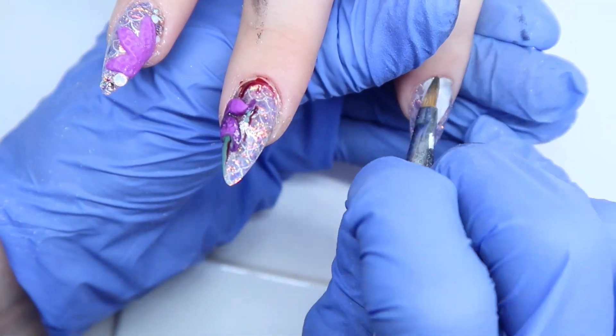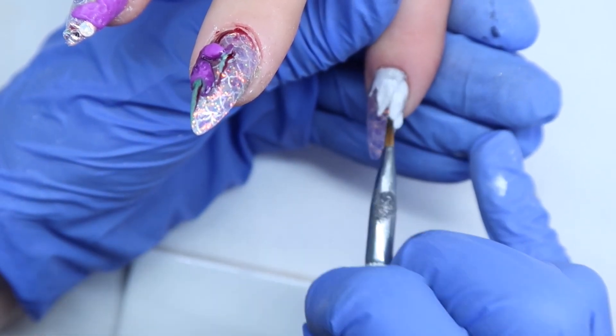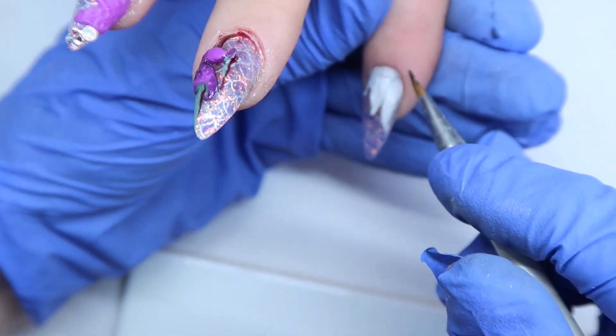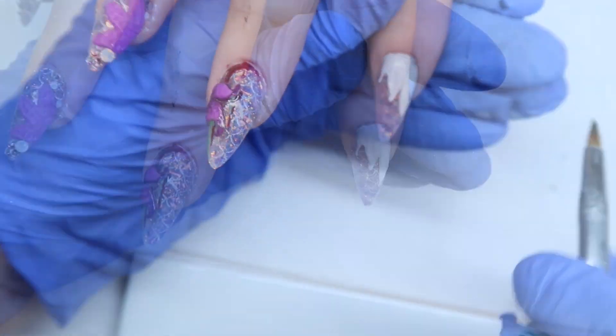So I'm just using again the same brush and some alcohol and just kind of pulling it into the place I want. And it doesn't really matter. This one is obviously no skill to this. You just place it on, pat it down, and really pull it into the place you want. And then you're going to want to cure that.